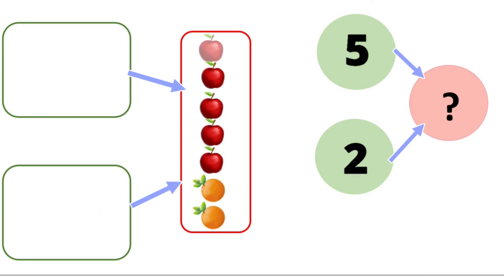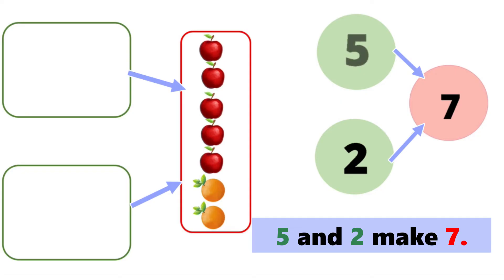If we put them together, we have one, two, three, four, five, six, seven fruits all together. So five and two makes seven.